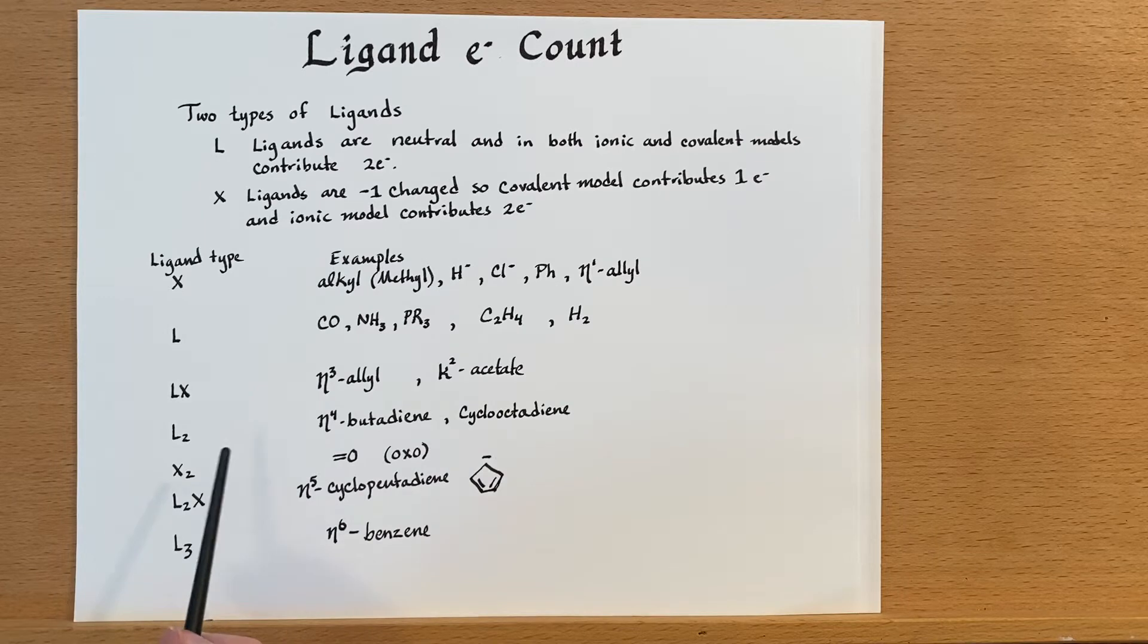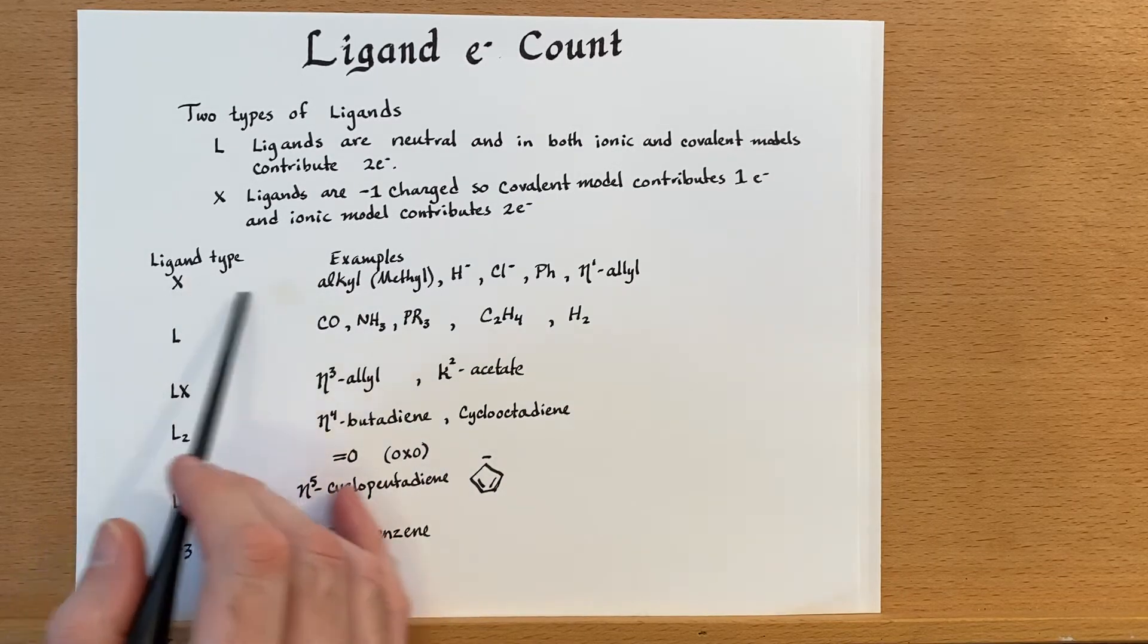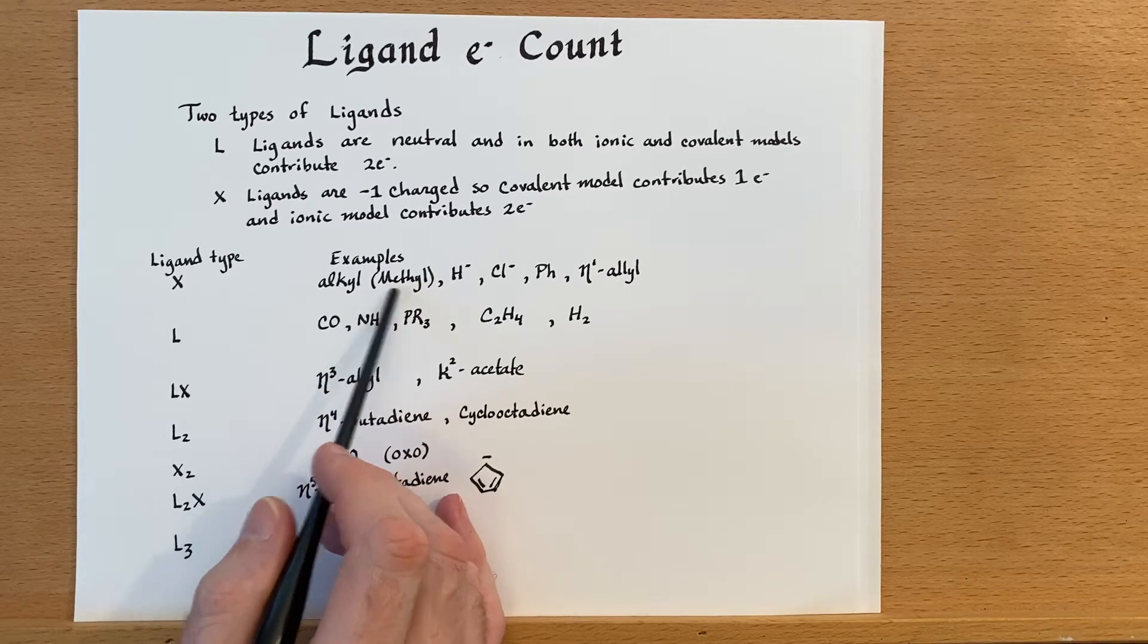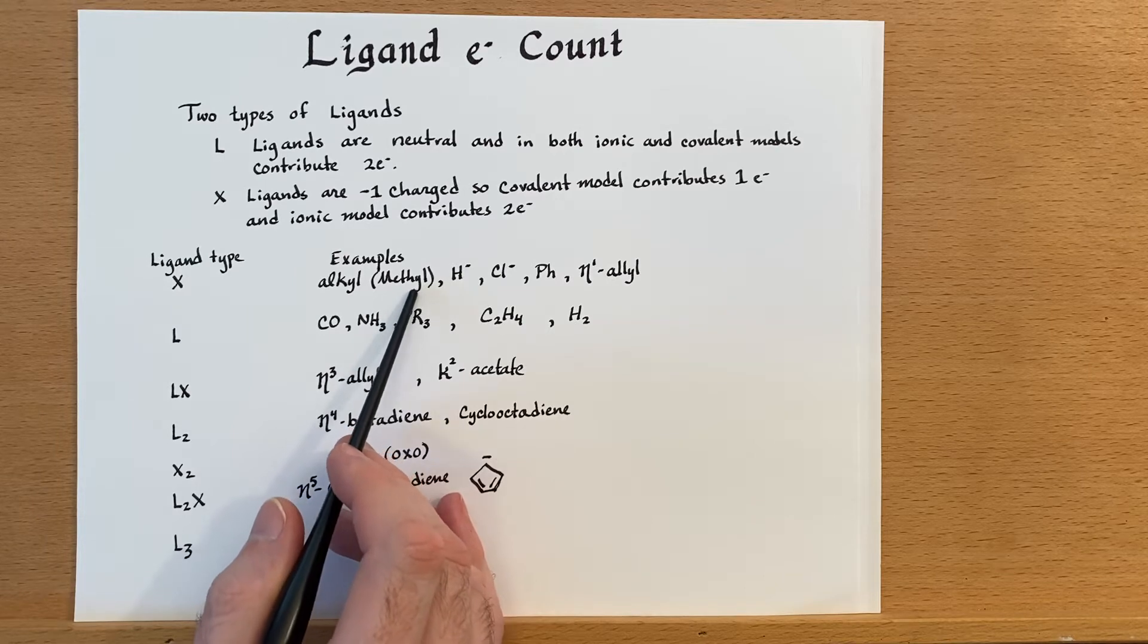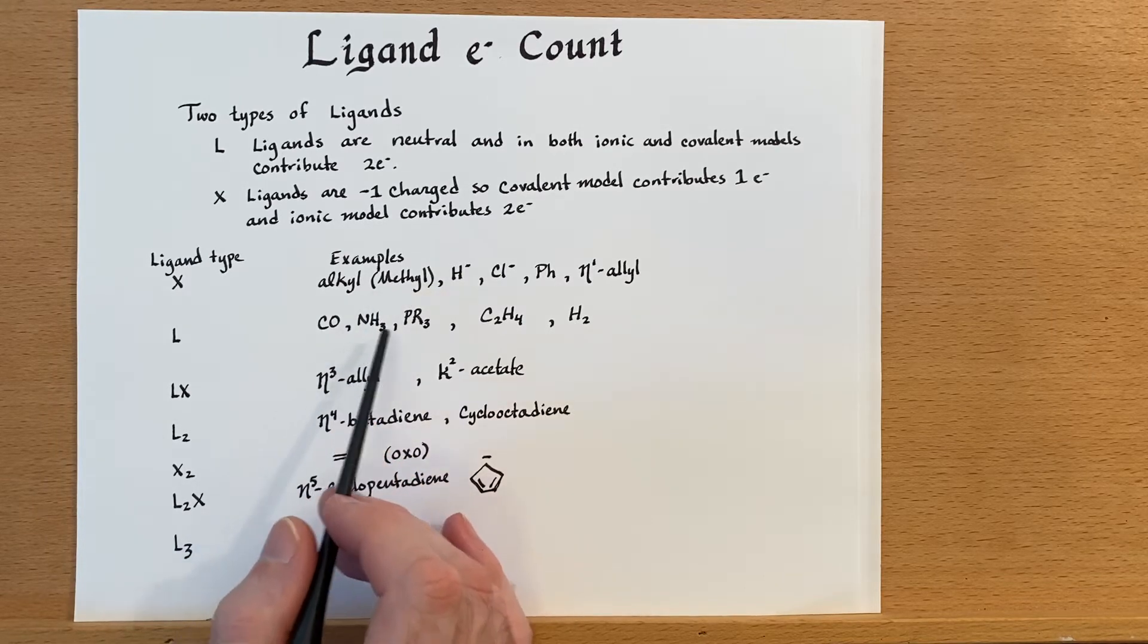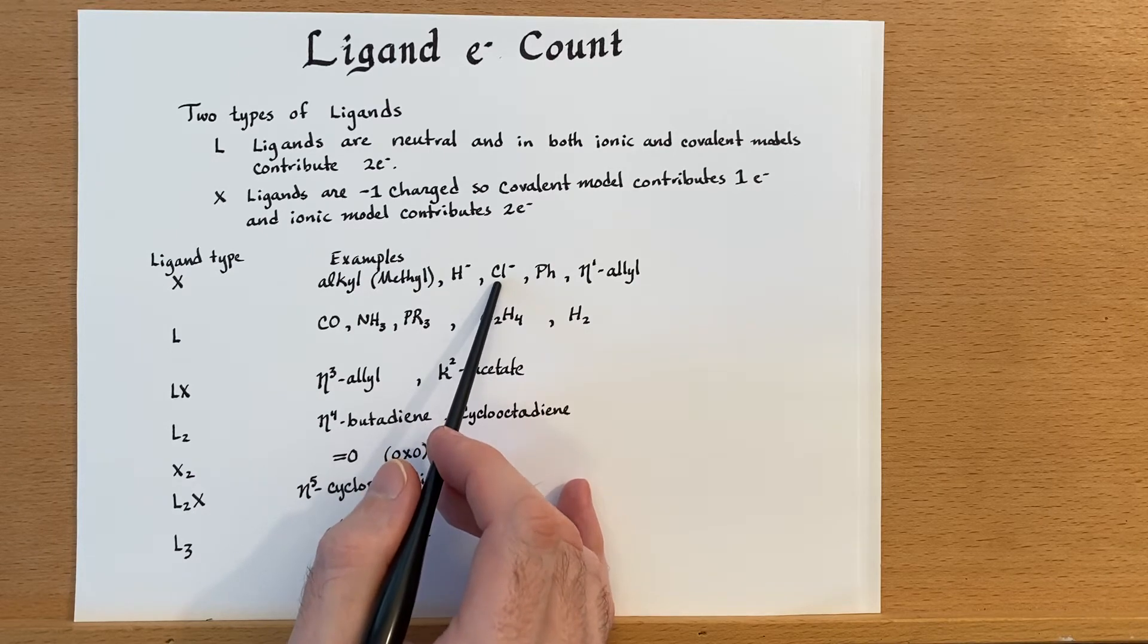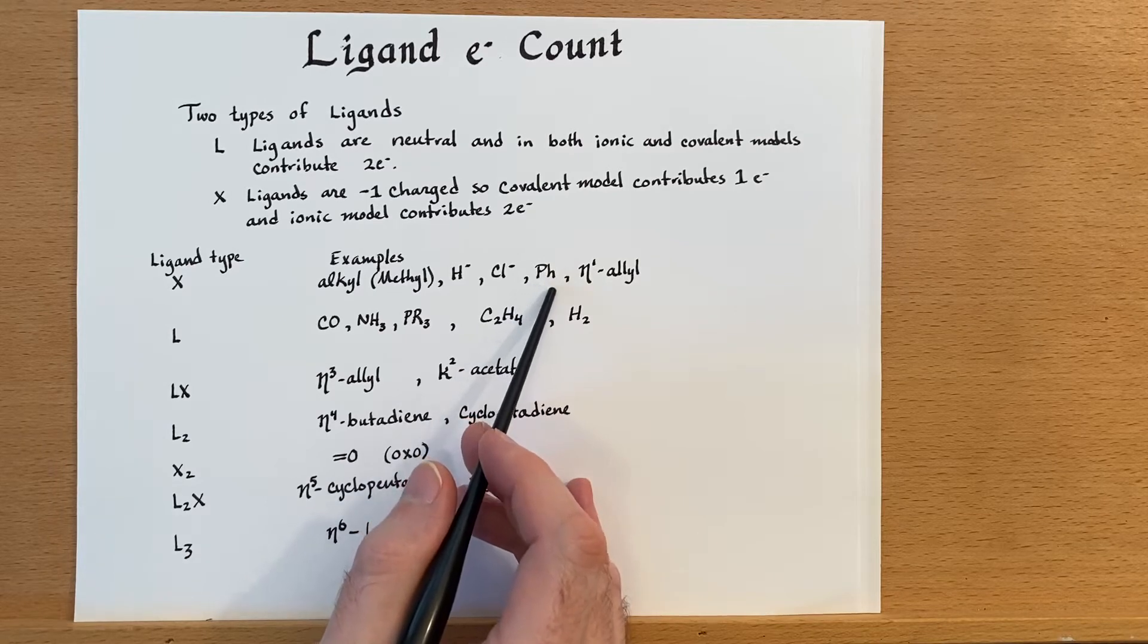So, let's talk about X ligands first. A single X ligand would be something like a metal alkyl. Some kind of carbon group, say CH3 negative, that could be a ligand, and that is a negatively charged one. Hydrides, also negatively charged. Halogens, such as chlorine, are negatively charged.